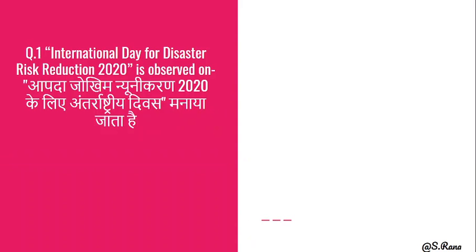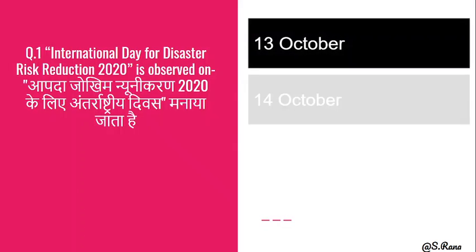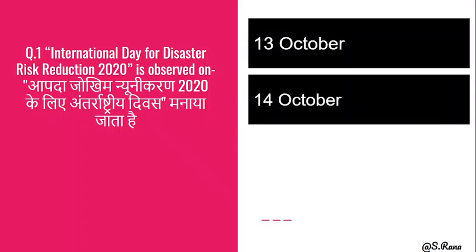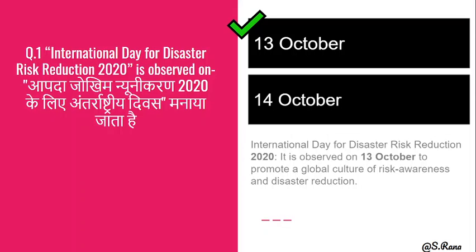First question: International Day for Disaster Risk Reduction 2020 is observed on which date? The options are 13 October or 14 October. Mark your answer in the comment section, and we will tell you how many of you have learned. The correct answer is 13 October.